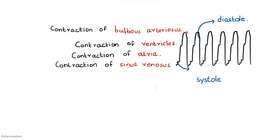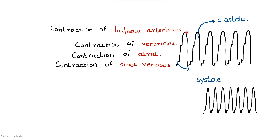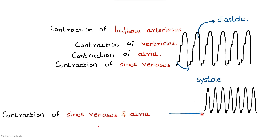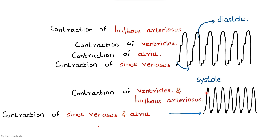Normally we get something like this wherein there are only basically two waves, because the contractions of two chambers get fused. The first wave is due to the contraction of the sinus venosis and atria, whereas the other one is due to the contraction of the ventricles and bulbus arteriosus.